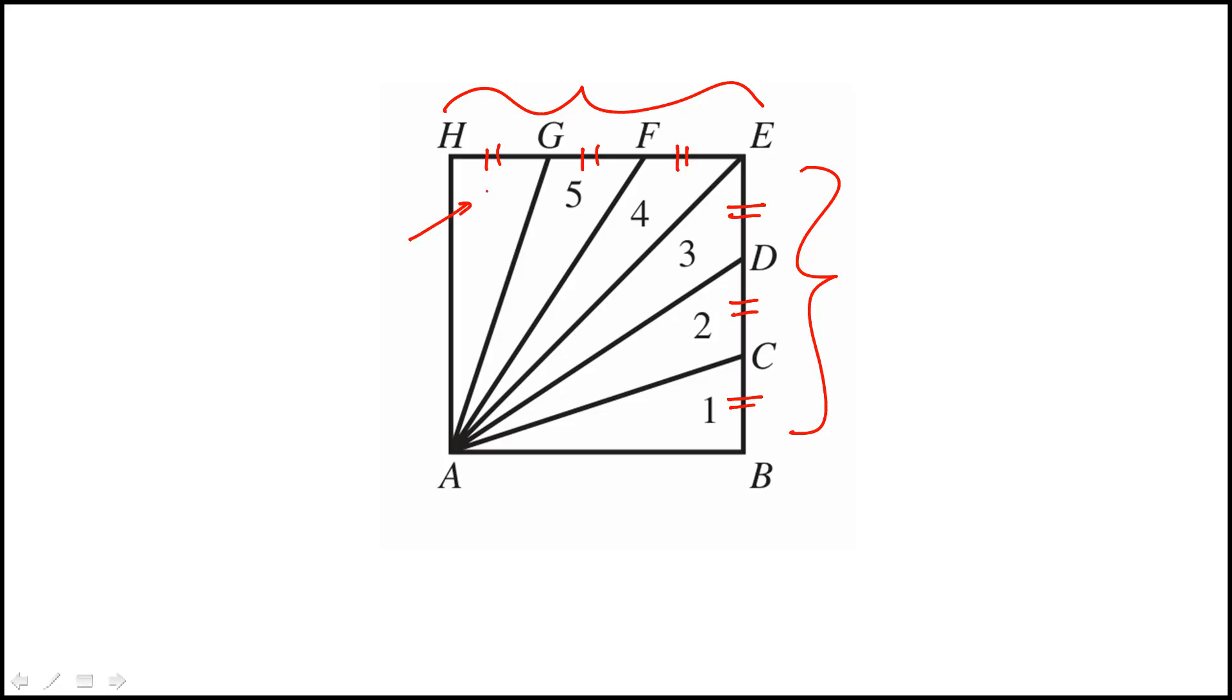Now the question is, how does the area of triangle AGH compare to all the other five triangles? So here, the area of this triangle—that would be the altitude AH, and then the base would be GH.